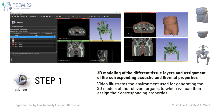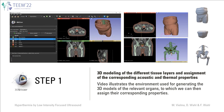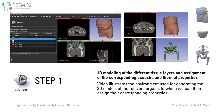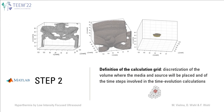The results of the segmentation are shown on the right, with the pelvic bone represented in green, the bladder in brown, the anus in beige, and the prostate in salmon. Step 2 is about the definition of the calculation grid, which implies a discretization of the volume where the media parameters will be placed, a procedure known as voxelization, and of the time steps involved in the time evolution calculation.